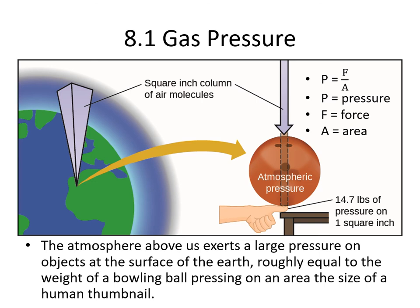The definition of pressure is that it's force per unit area. We can write an equation: pressure P equals force F divided by area A. Something to keep in mind is that atmospheric pressure is always pushing down on us and our reactions — that is the pressure from the atmosphere above us. It's actually not insignificant; it's the same amount of pressure as a bowling ball pressing on an area the size of your thumbnail.